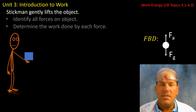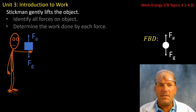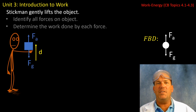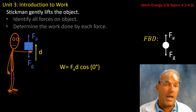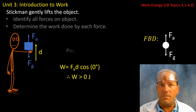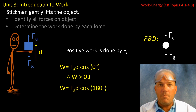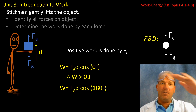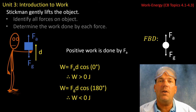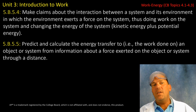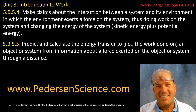Here's another example: Stickman gently lifts the object. There are the same forces acting — force applied and force of gravity — but this time the displacement is up. When we calculate the work done by the force applied, we get cosine zero, which means work is positive. Positive work is done by the force applied. Now if we consider the force of gravity, which is straight down toward earth, but the displacement was straight up in the opposite direction — 180 degrees — cosine of 180 equals negative one, giving a negative value when we calculate work. So in this video I've introduced you to the concept of work, and we have a lot of work ahead of us in this unit.